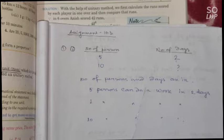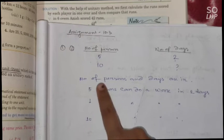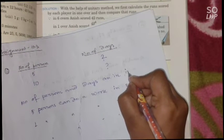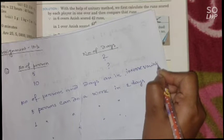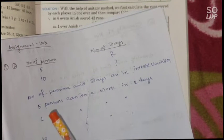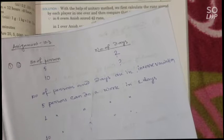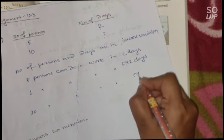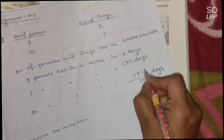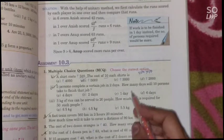When the number of persons increases, the number of days decreases — more people working means less time. So these two quantities are in inverse variation. Five persons can do the work in two days, so one person takes 5 into 2 days. For 10 persons: 5 into 2 divided by 10 equals 1 day. So the answer is 1 day.